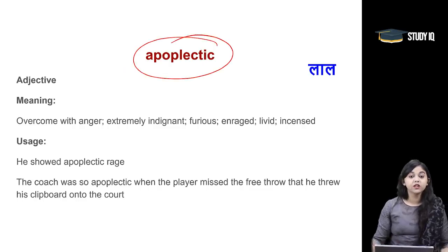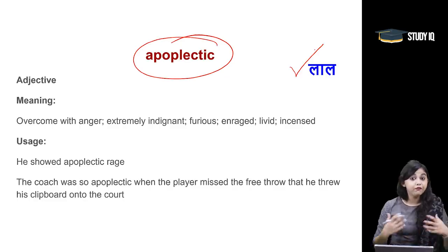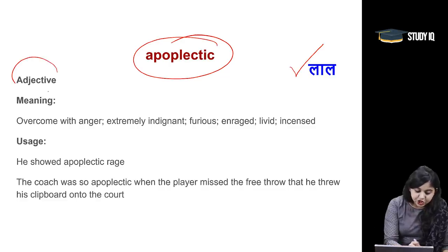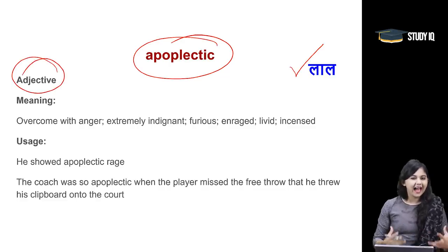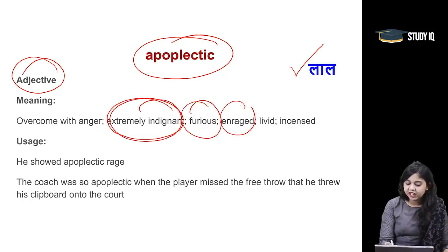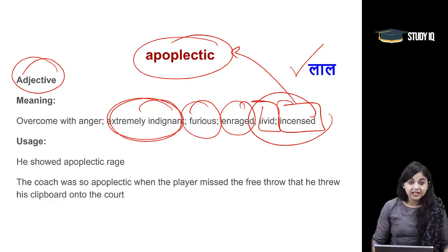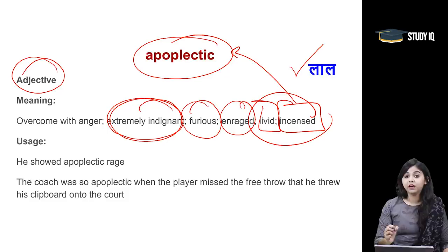Moving on to the next word: Apoplectic. Apoplectic means when you are very extremely angry — when you are enraged, infuriated. The adjective means when you are overcome with anger, extremely indignant — furious, enraged, livid, or incensed. These are very important synonyms of apoplectic. When you are so angry that you turn red with rage, we use the word apoplectic.